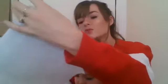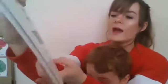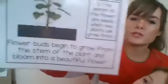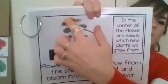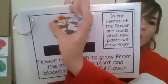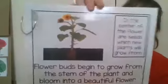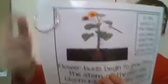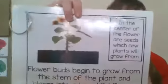Flower buds begin to grow from the stem out of the plant and bloom into a beautiful flower. So before we see flowers, it's called a bud, and the bud opens up and forms into a flower. In the center of the flower are seeds, which new plants will grow from. So in the middle of our sunflower, there are tiny little seeds.